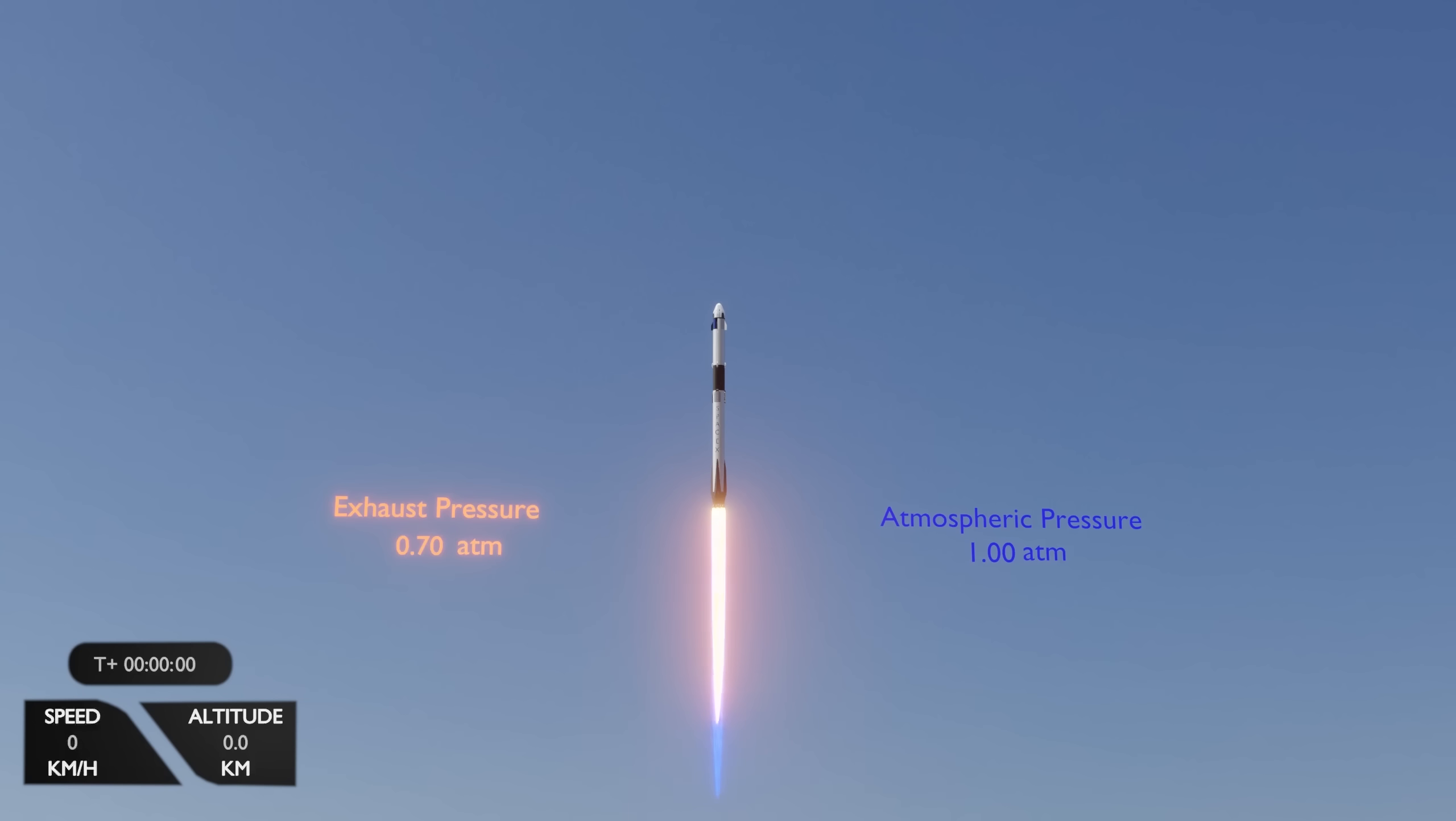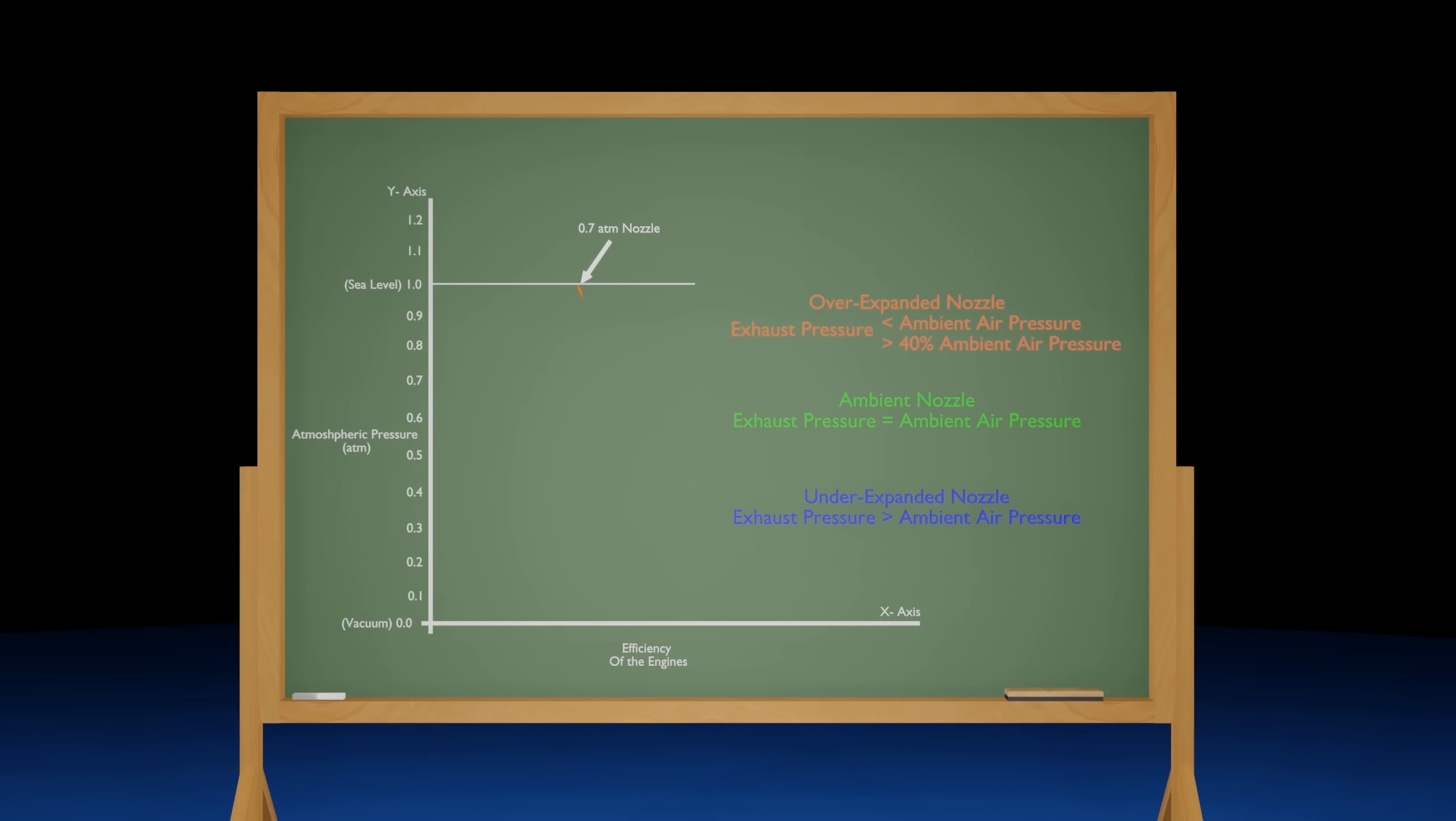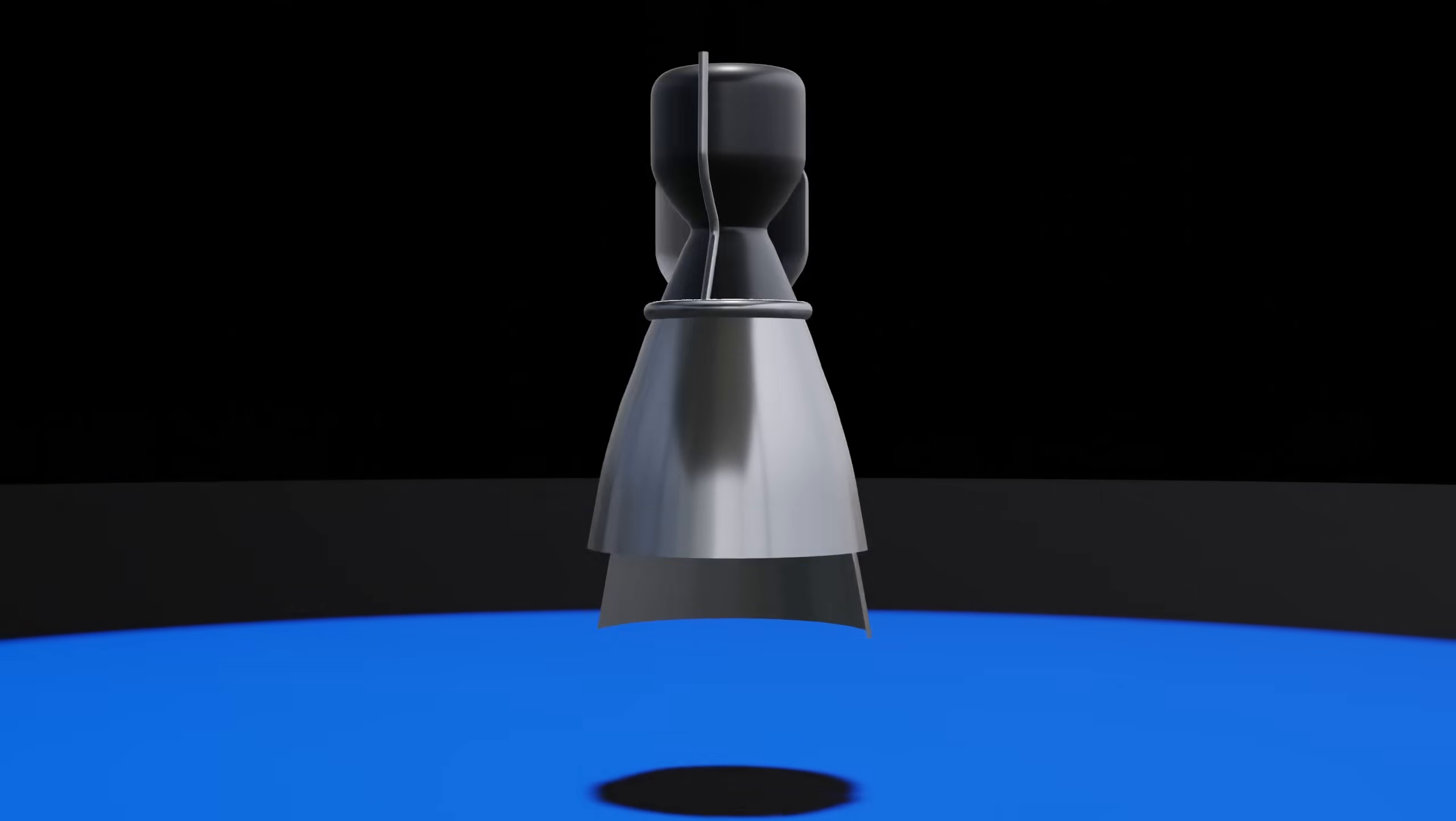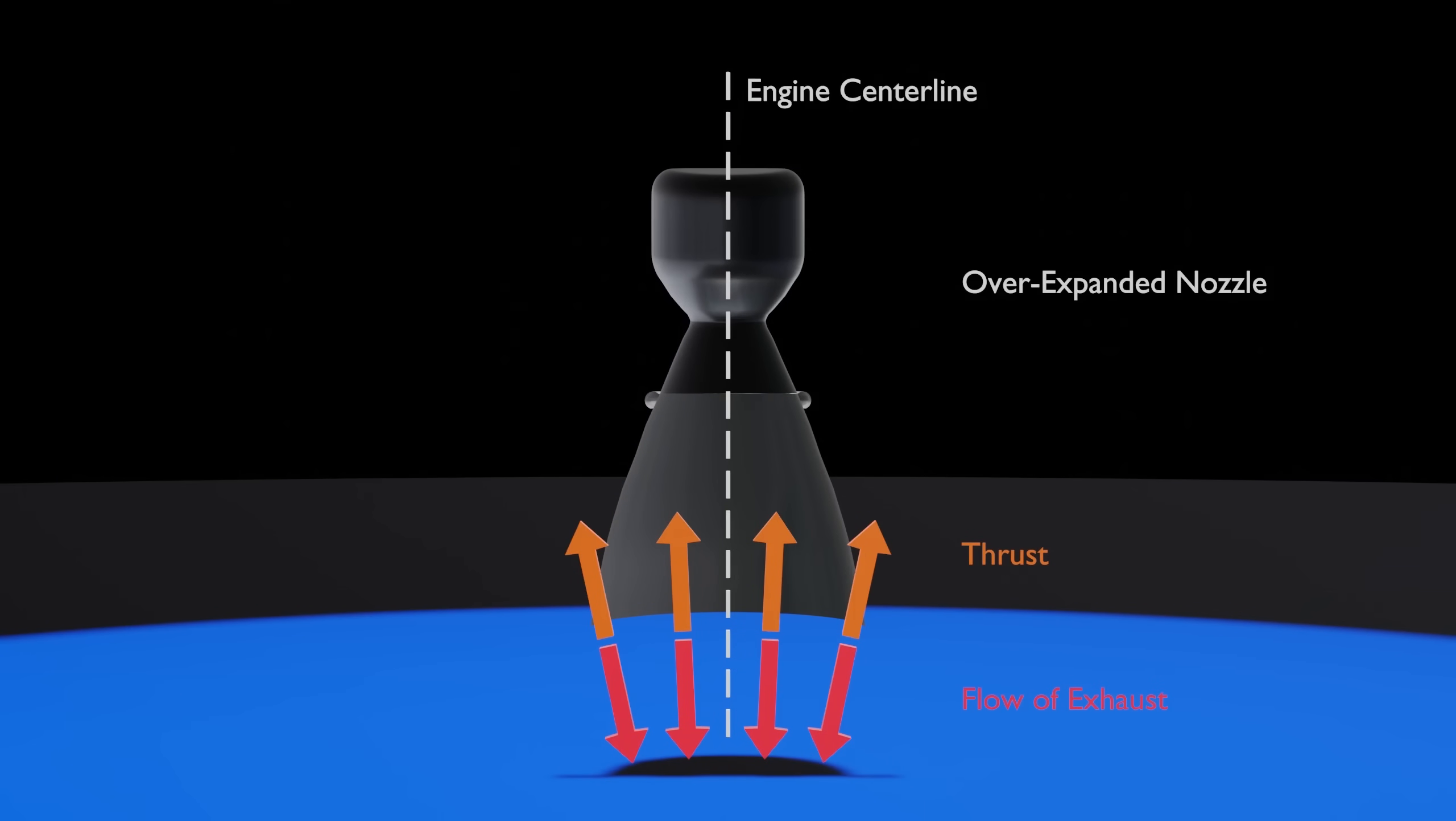At liftoff, the ambient air pressure is 1 atmosphere, and of course the exhaust pressure is at a constant 0.7 atmospheres. A nozzle in this relationship is referred to as an over-expanded nozzle because the ambient air pressure is greater than the exhaust pressure. There are certain inefficiencies linked with an over-expanded nozzle. The higher ambient pressure around the rocket's exhaust will squeeze the exhaust and force the exhaust towards the centerline of each nozzle.